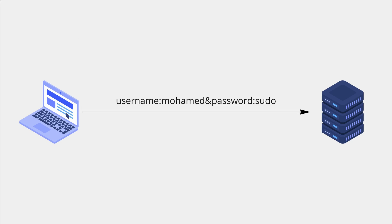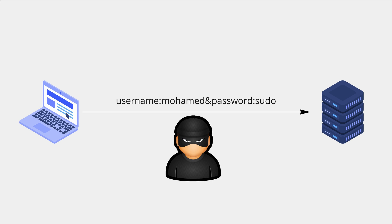Imagine a login form where users enter their username and password. When the form is submitted over regular HTTP, the data will be sent in raw form through the network until it reaches the server. Here is how the data is transferred from the browser to the server — anyone who can intercept the network calls will be able to see the username and the password submitted.